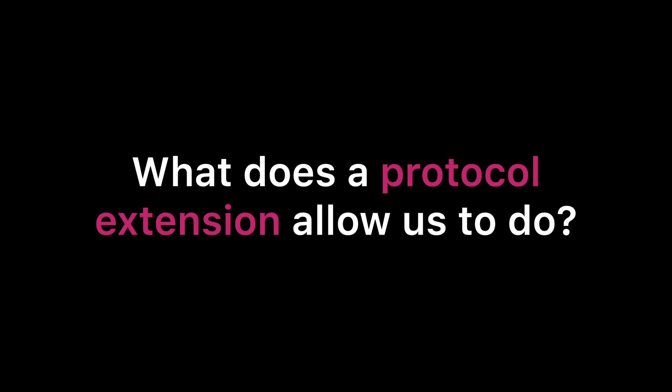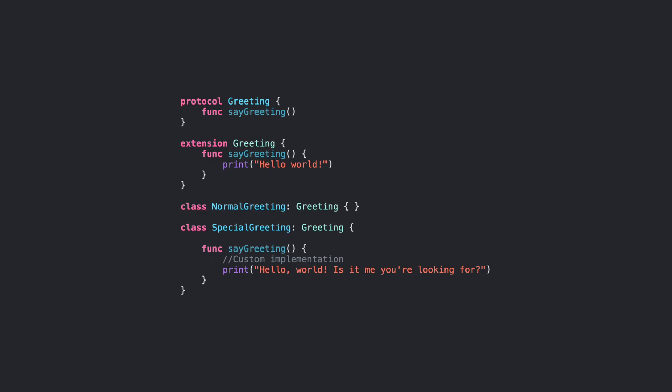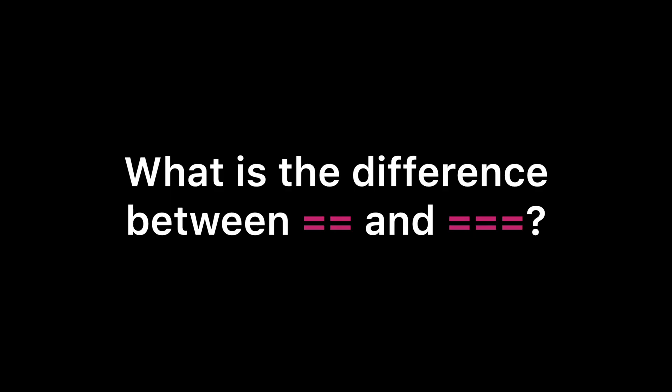Next, what does a protocol extension allow us to do? The main advantage of a protocol extension is that it allows you to add additional requirements to a protocol but also allows you to make some of your protocol functions optional. In our extension we define a default implementation for the say greeting function, and if we expect the implementation to be similar wherever it's implemented, we can minimize duplicating code by providing that default. The main takeaway is that it helps you create optional protocol functions and reduce code duplication.